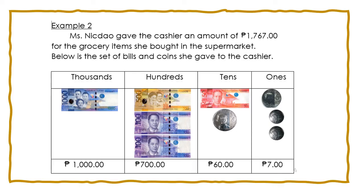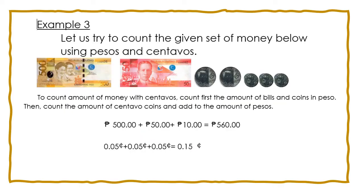So, if we add all together 1,000 plus 700 plus 60 plus 7, we get 1,767 pesos. Let us try to count the given set of money below using pesos and centavos. We have a 500-peso bill, 1 fifty-peso bill, 2 five-peso coins, and 3 five-centavo coins. To count the amount of money with centavos, count first the amount of bills and coins in peso. We have 500 plus 50 plus 10 pesos, a total of 560 pesos. Then count the centavo coins: 5 centavos plus 5 centavos plus 5 centavos equals 15 centavos. Let's add 560 pesos and 15 centavos.